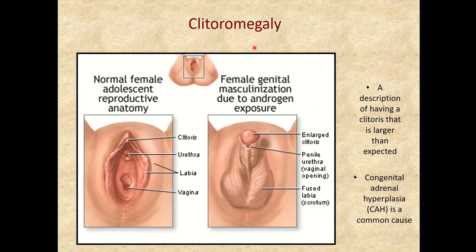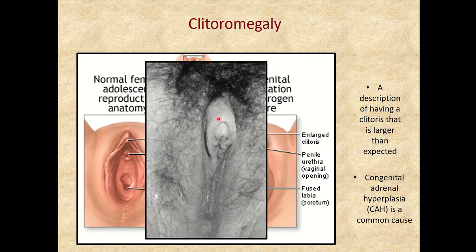One classic case discussed in development is clitoromegaly. This is the typical presentation of the pudendal region of the female, but some females end up having an enlarged clitoris. Sometimes it is also associated with fused labia, but this isn't always the case — it can sometimes just be an anomaly on its own. Here is one presentation of clitoromegaly where there is just an enlarged clitoris and the labia are not fused. This individual may consider themselves intersex or they may not — this might just be an anatomic variation for them.